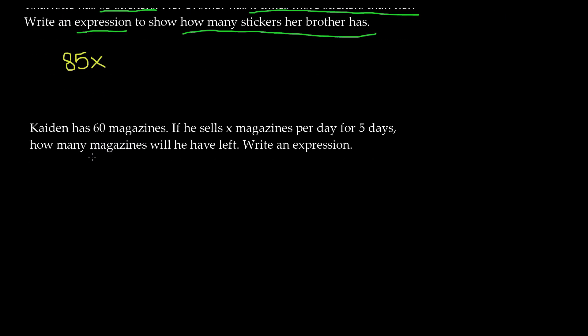Our last word problem: Caden has 60 magazines. If he sells x magazines per day for 5 days, how many magazines will he have left? Write an expression. He starts with 60 magazines and sells x magazines per day for 5 days. If he sells 2 per day for 5 days, that's 10 magazines sold. Since x is unknown, we write 5x to represent how many he sells total.